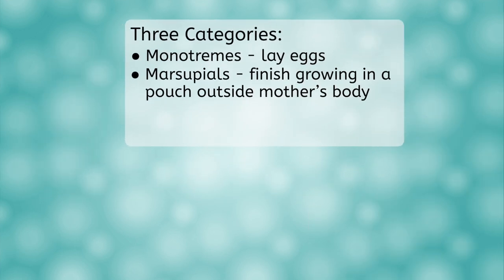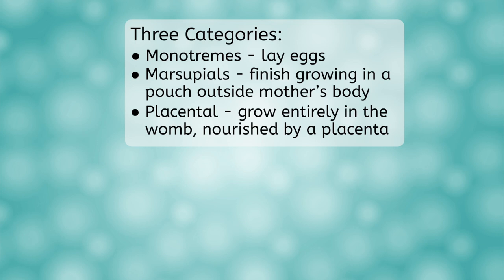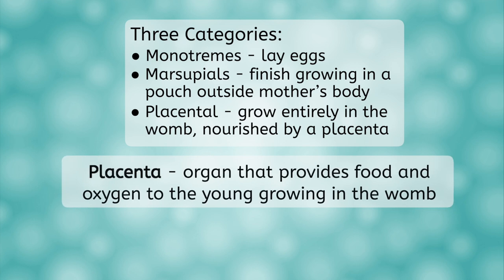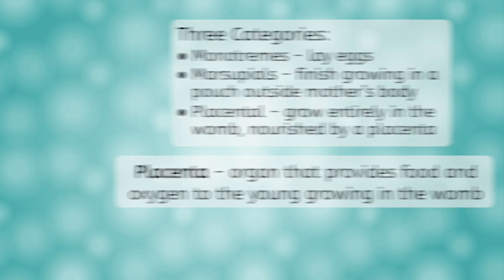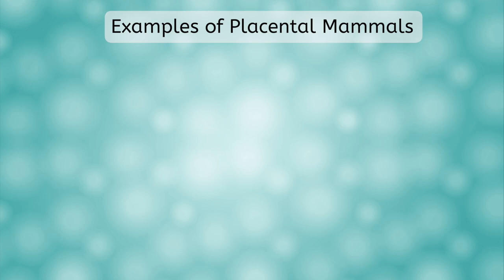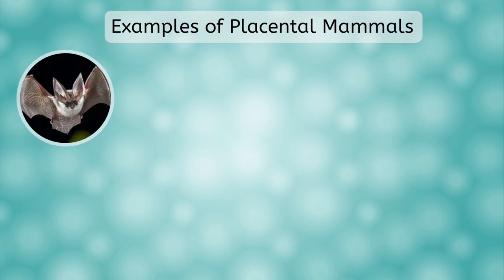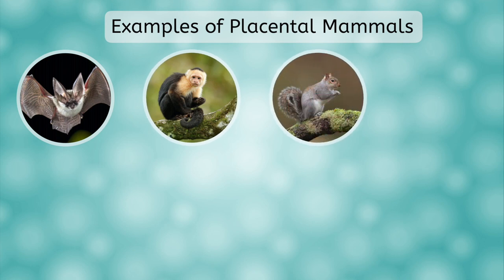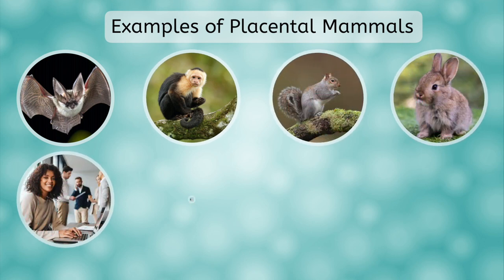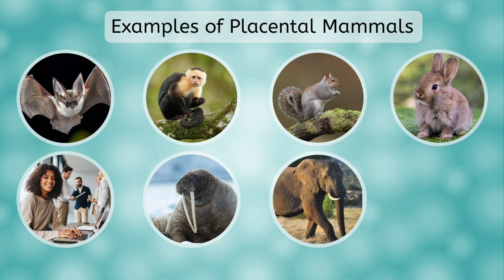The last group is the largest: placental mammals. These are mammals that grow inside the female with the help of the placenta. The placenta is an organ that provides food and oxygen while removing waste from the young growing in the womb inside the mother's body. There are 18 orders that fall under this category, and some examples of these animals are bats, monkeys, squirrels, rabbits, humans, walruses, elephants, and horses.